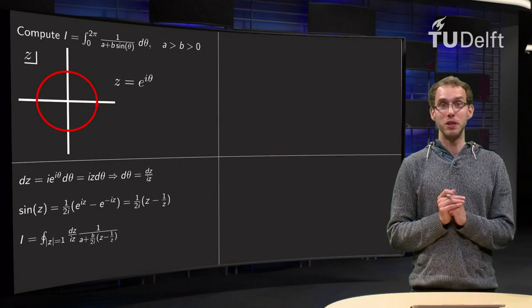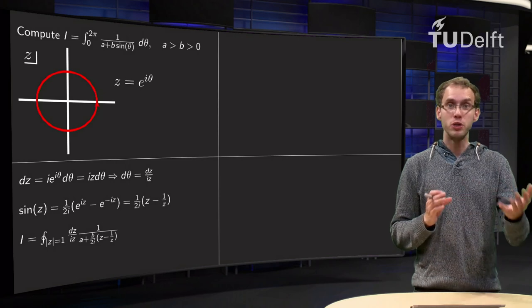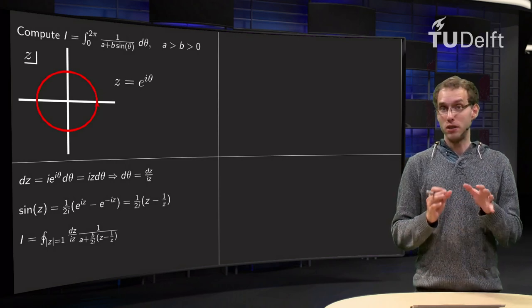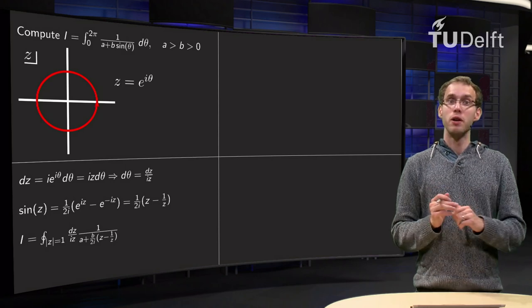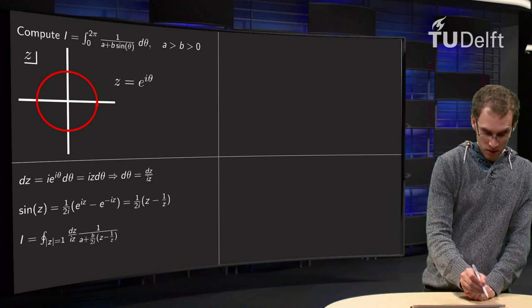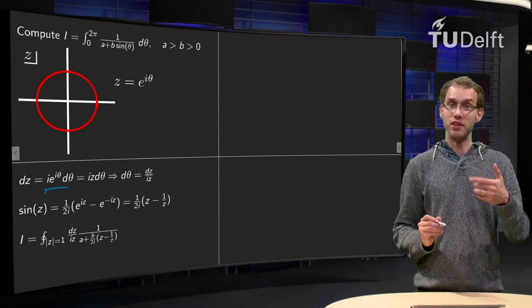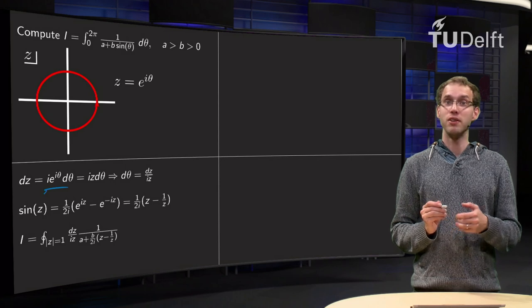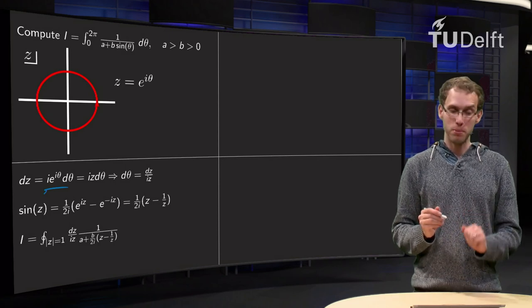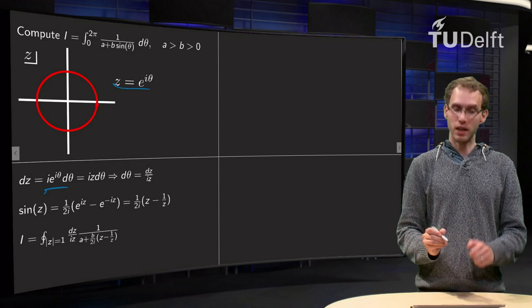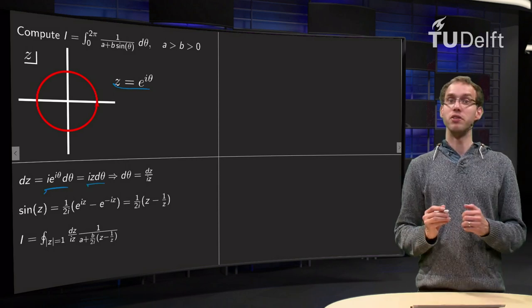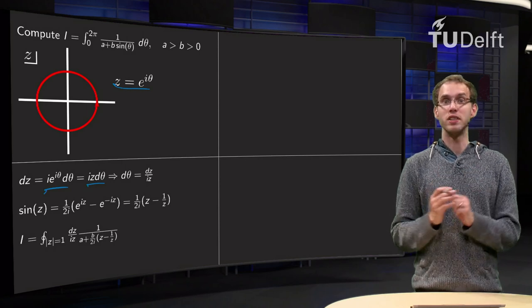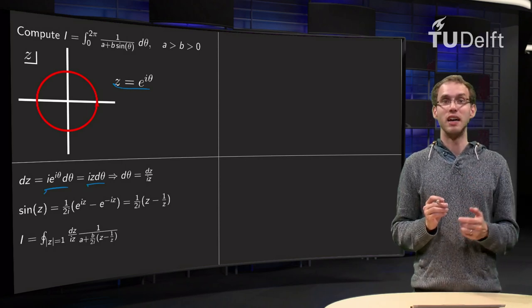So how are we going to compute integrals of this type? What you always do, you have to get rid of the d theta first. That will always work the same way. We know that dz equals i times e to the power i theta d theta, and then we want to get rid of the e to the power i theta, which is no problem, because it happens to be equal to z. So we get i times z times d theta, so d theta equals dz over iz, that is always the same.